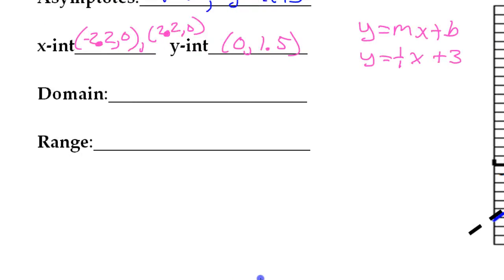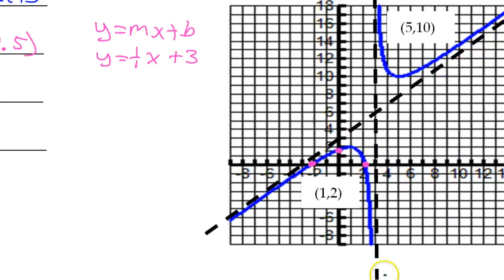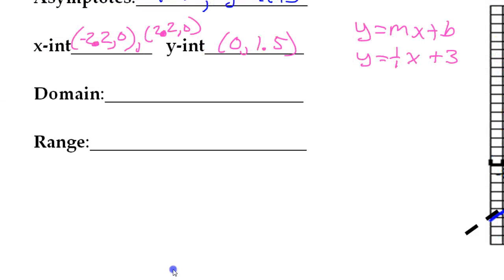We also need the domain and the range. The domain is the x-values. This function goes to the left forever and to the right forever, but it skips the x-value of 3 because of the vertical asymptote. So the domain is negative infinity to 3, union 3 to positive infinity.